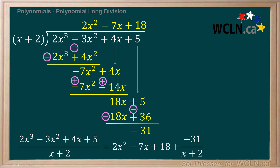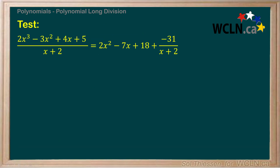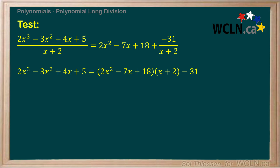To prove that this is true, let's test our result. We'll multiply both sides of the equals sign by x plus 2 to give us what is known as the division statement. It tells us that our dividend, 2x cubed minus 3x squared plus 4x plus 5, equals the quotient 2x squared minus 7x plus 18 times the divisor x plus 2, plus the remainder negative 31. To prove our quotient and remainder are correct, we will expand the brackets on the right-hand side and combine like terms to see if we end up with the same expression on the left-hand side.